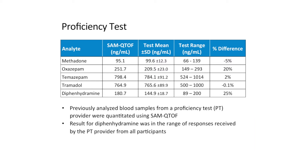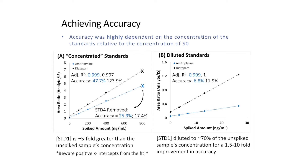In the case of diphenhydramine, the percent difference between the test mean and that measured using the standard addition QTOF method was 25%. But the result for diphenhydramine was within the range of responses received by the PT provider from all participants and still demonstrated reasonable accuracy.